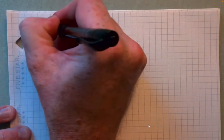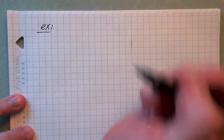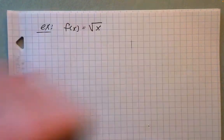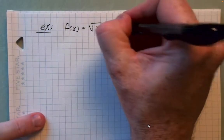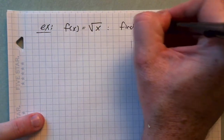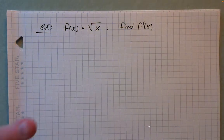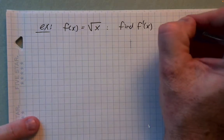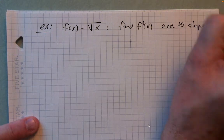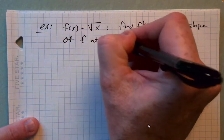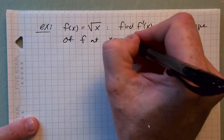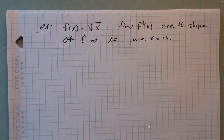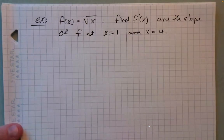Let's find f prime of x for the function f of x equals the square root of x. And then once we've found the derivative, let's find the slope of f at x equals 1 and x equals 4, just to emphasize that we can do such things with the derivative.